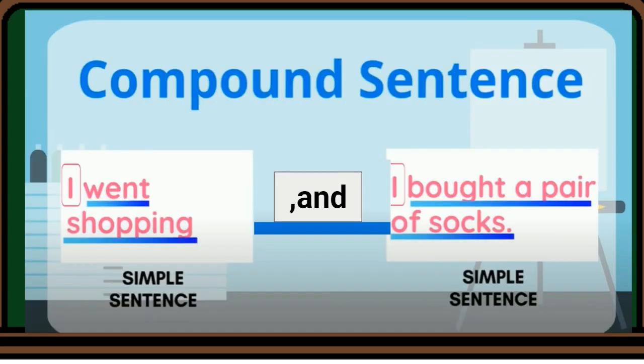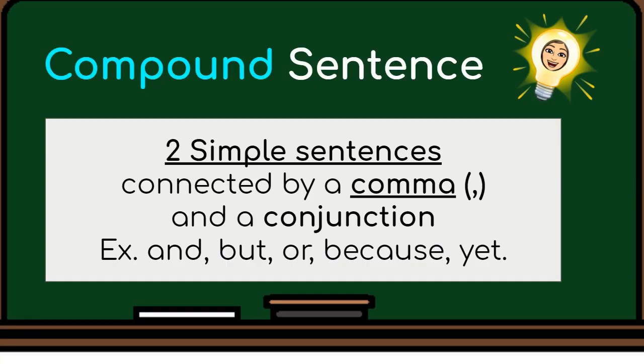Another example of a compound sentence — here we have two simple sentences, and it is connected by the comma and the conjunction and. Remember that a compound sentence is composed of two simple sentences connected by a comma and a conjunction.